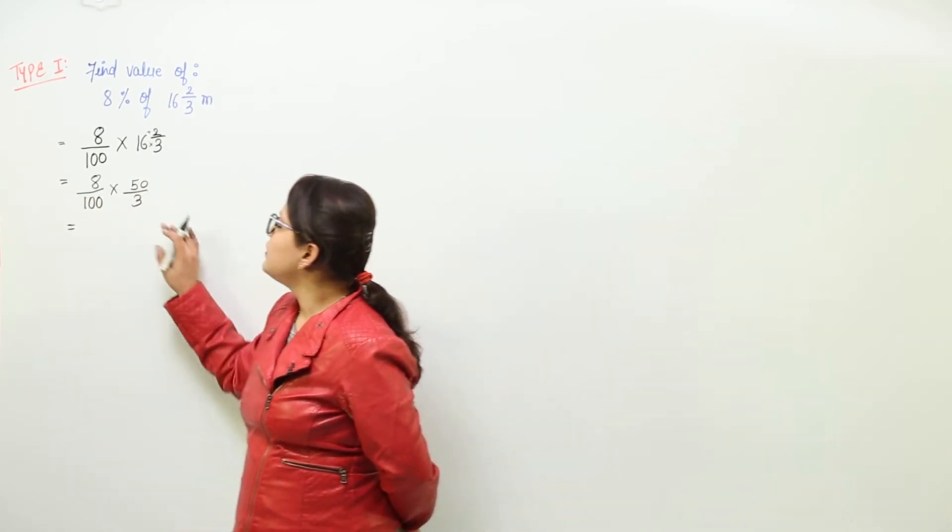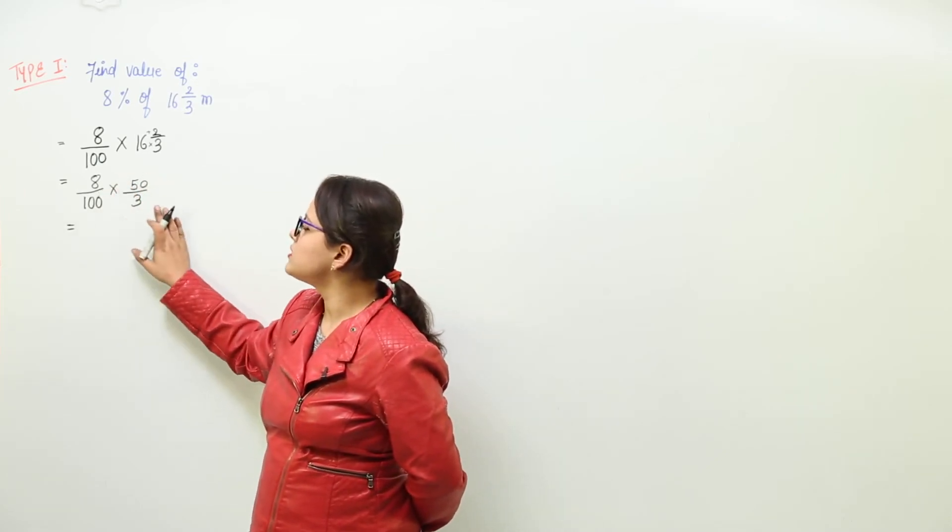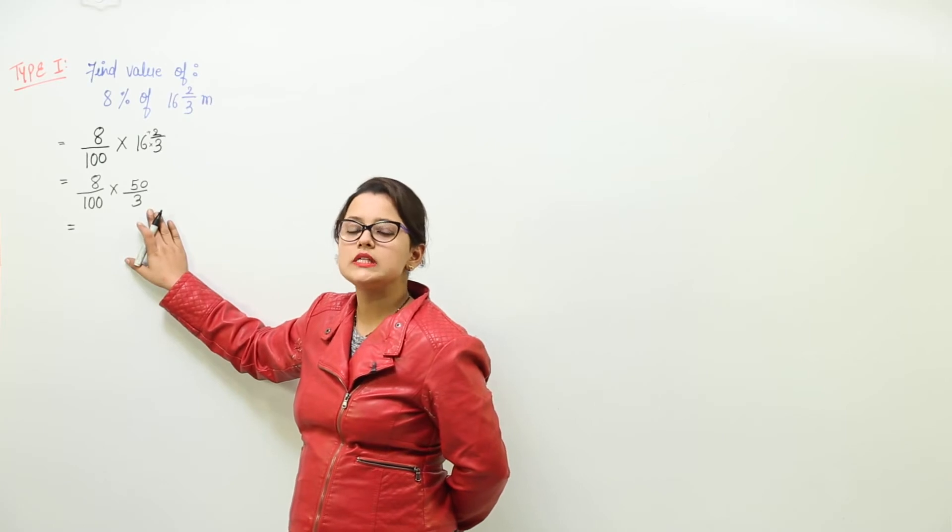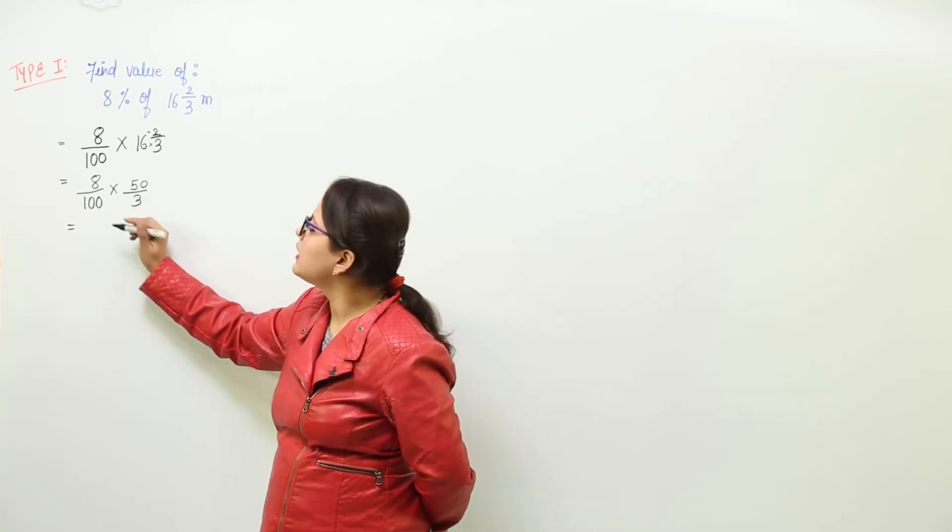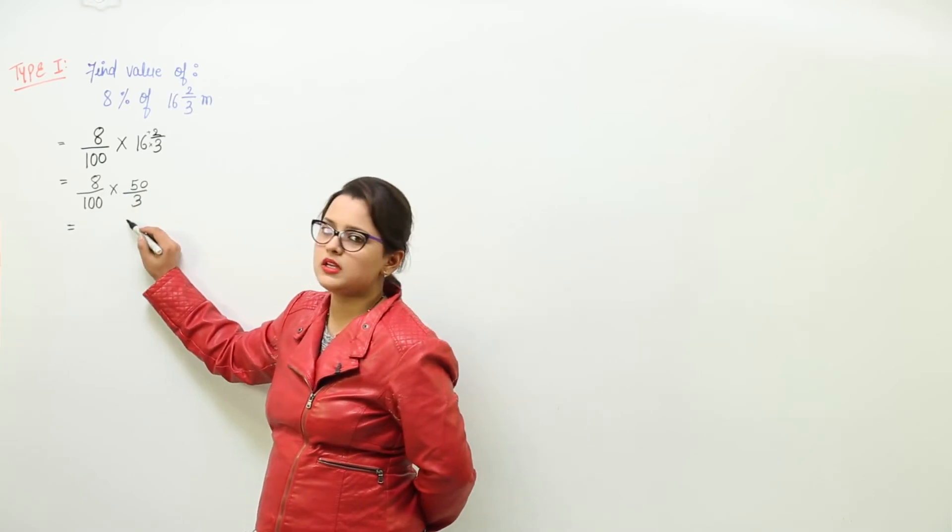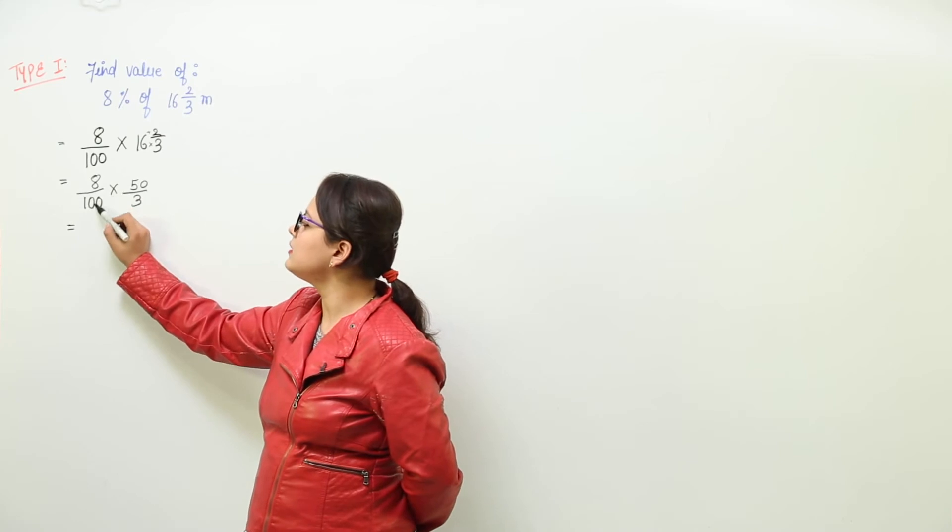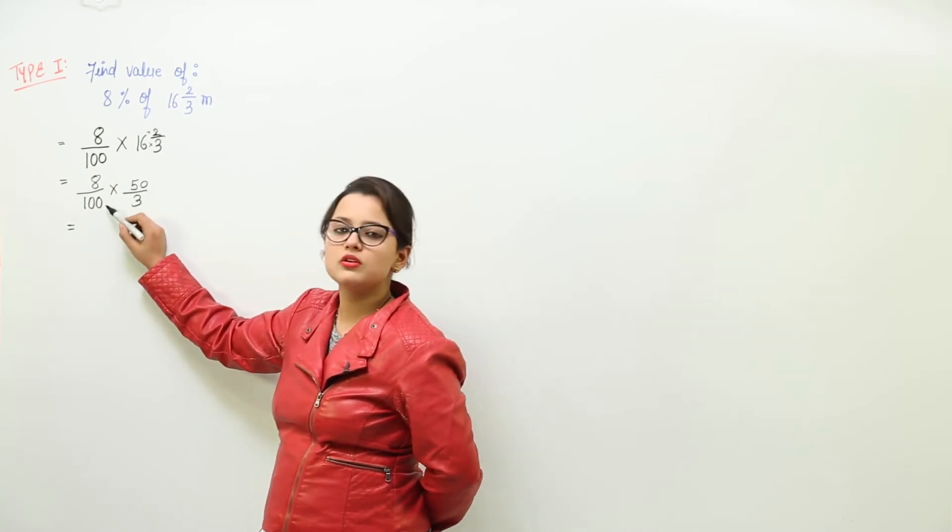We will just solve them. We can actually multiply the numerator with numerator and denominator with denominator. Or the simpler method would be that you cancel out the common factors between numerators and denominators and then solve. So I know that there is a common factor between 8 and 100, also 50 and 100.